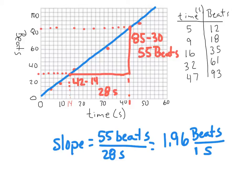And that's the same thing as saying 1.96 beats for every one second. So then we can make for every statements. The for every statement would come right from this slope that we have. And it would say something like this: For every increase of 1.96 beats, there's an increase of one second. And then we could switch that around too. For every increase of one second, there's an increase of 1.96 beats. And so that's the for every statement that we're going to use.